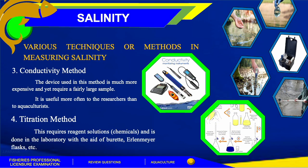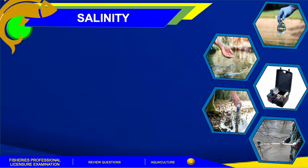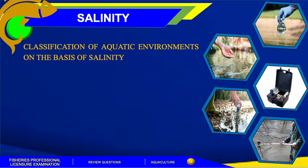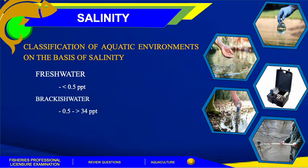The last salinity measurement method is the titration method, which requires reagent solutions or chemicals and is done in the laboratory with the aid of a burette, Erlenmeyer flask, and others. We also have three classifications of aquatic environments based on salinity: freshwater with less than 0.5 PPT, brackish water with 0.5 to greater than 34 PPT, and marine water with 34 to 37 PPT. The average salinity of marine water is 35 PPT.